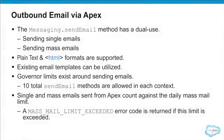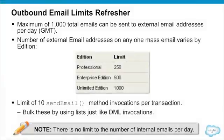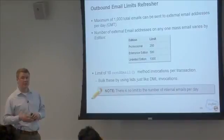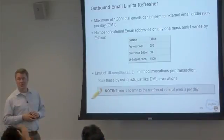Single and mass emails sent from Apex count against the daily mass email limit. That limit is basically 2,000 — you get to send 1,000 single emails and 1,000 mass emails per day. It's a very low number, but at the end of the day, Salesforce is not in the business of doing high volume email. You would need to be very restrictive in terms of who you're sending these emails to due to those 2,000 limits.